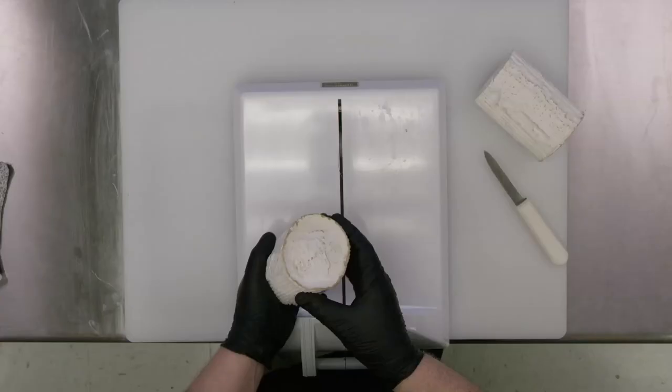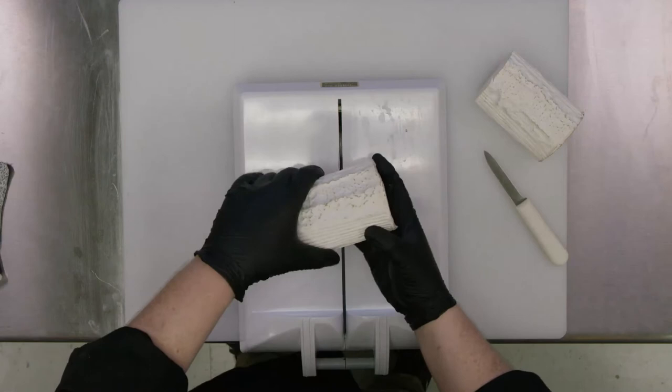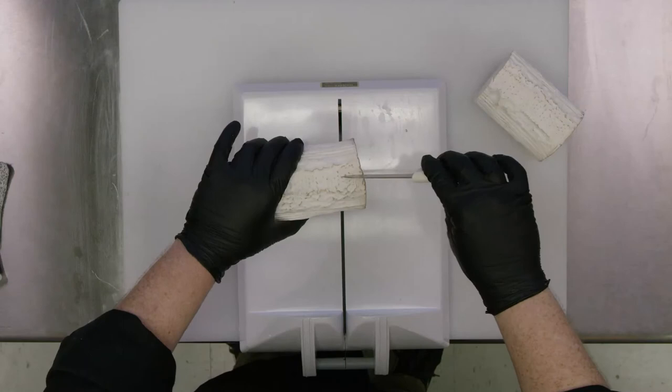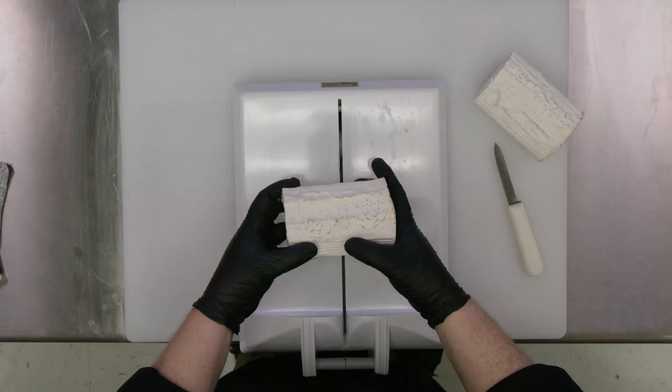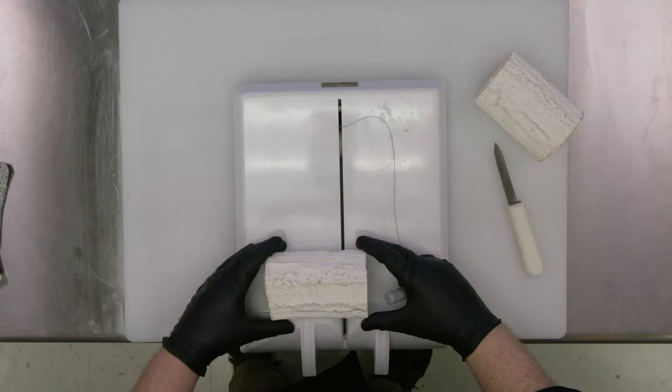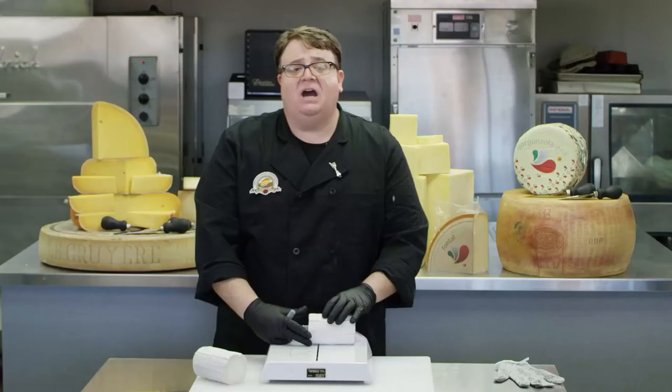Now you'll notice we have a rind end on this piece of cheese. We're not going to want to cut it straight. Instead, we'll leave enough cheese so we can cut diagonally to ensure even rind distribution for our customers.